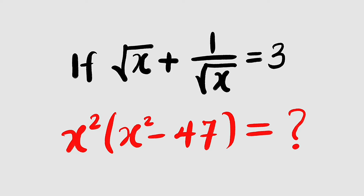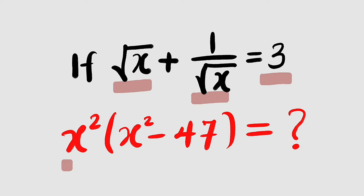Hello, good day viewers. Here is another simple Olympian mathematics question. We are given that if the square root of x plus 1 divided by square root of x is equal to 3, we are asked to evaluate x squared multiplied by x squared minus 47. So let's get started.